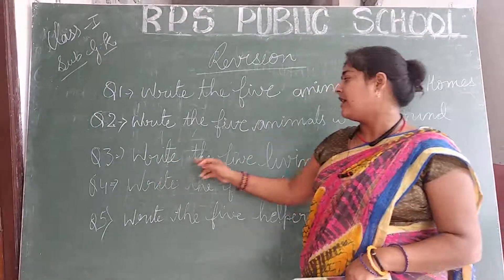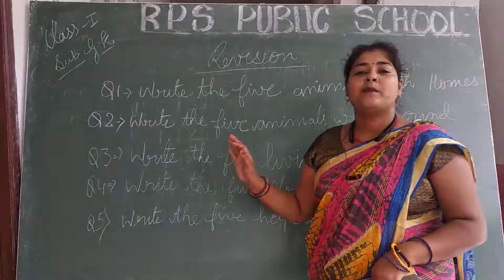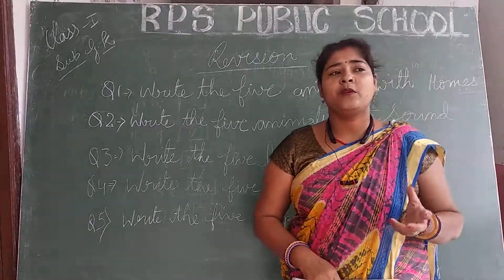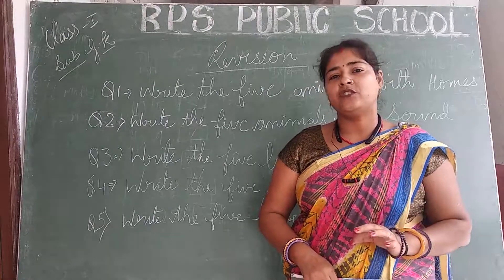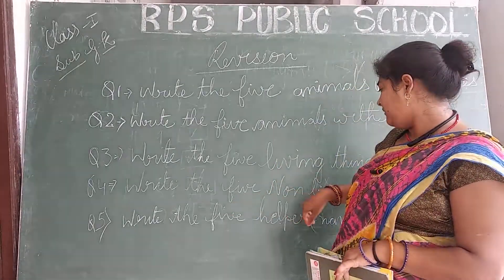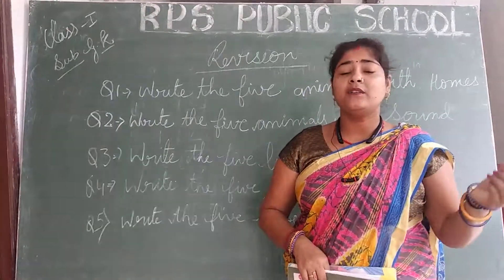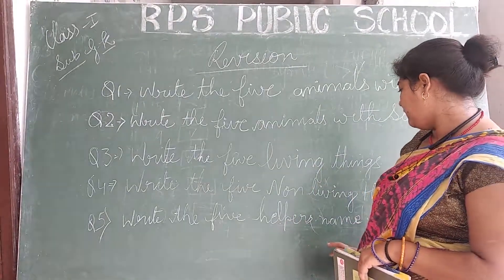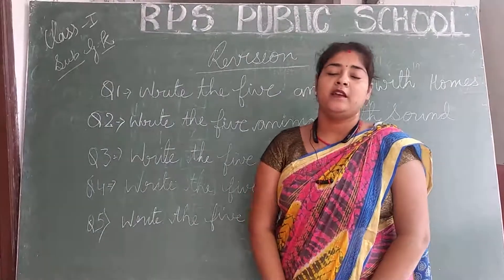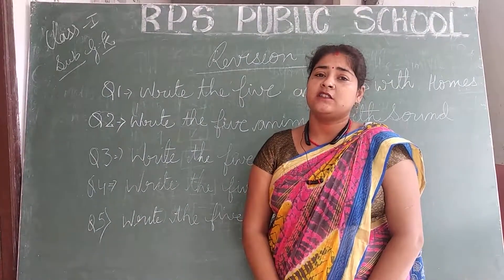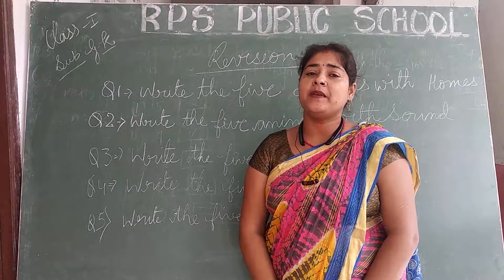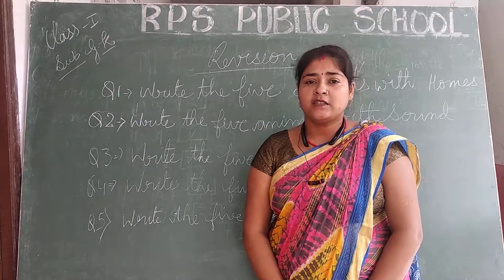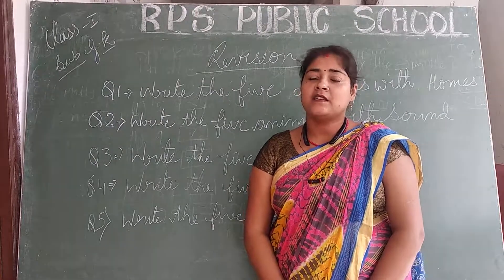Also write the five living things. Then write the five helpers names. Students, helpers names — for example: doctor, milkmaid, and postman, and so on. Write five helpers names in total.